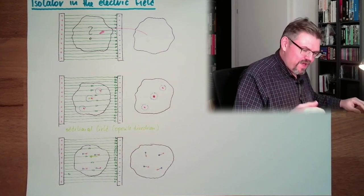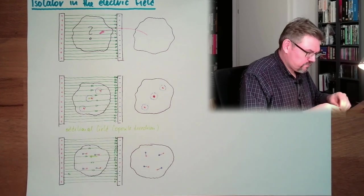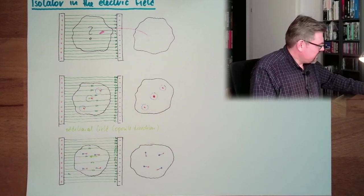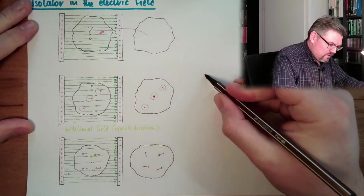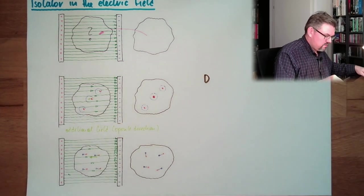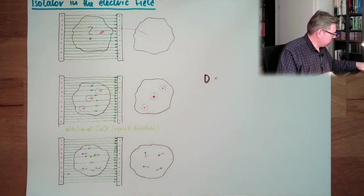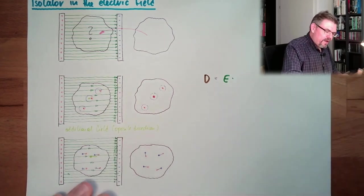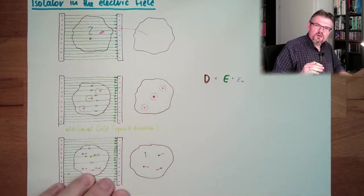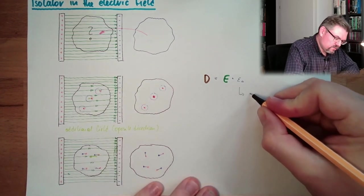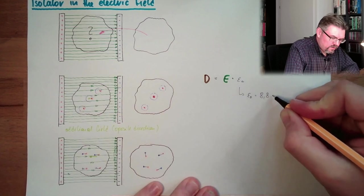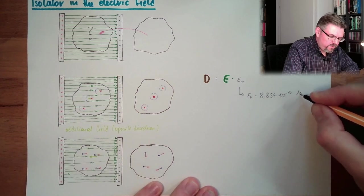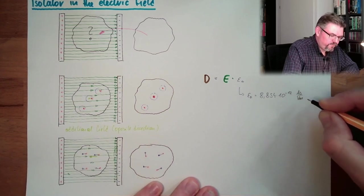So how to describe this mathematically? How to describe this? We said our flux density D was the electric field multiplied by epsilon zero. This epsilon zero, we said, was a constant. Epsilon zero, 8.854 times 10 to the power of minus 12, ampere seconds per volt meter.